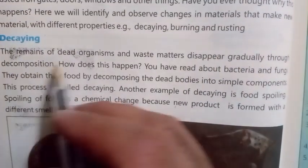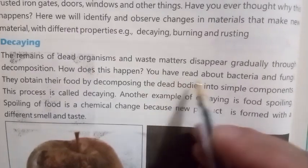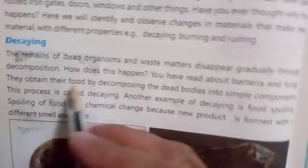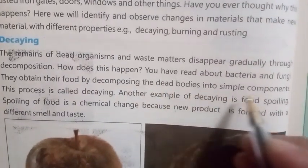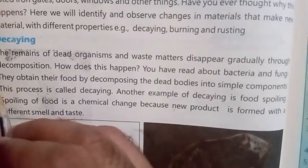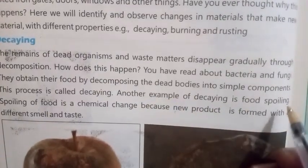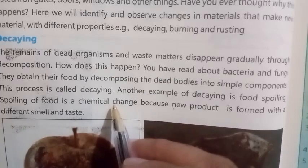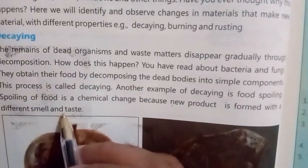Decaying: the remains of dead organisms and waste matter disappear gradually through decomposing. Bacteria and fungi obtain their food by decomposing dead bodies into simple components. This process is called decaying. Another example of decaying is food spoiling. Spoiling of food is a chemical change because a new product is formed with a different smell and taste.